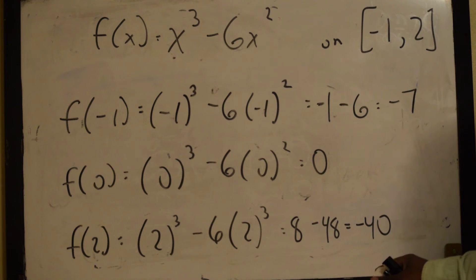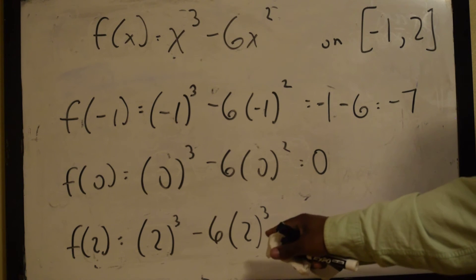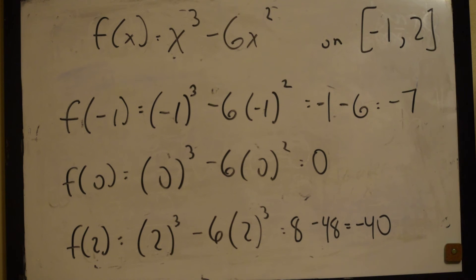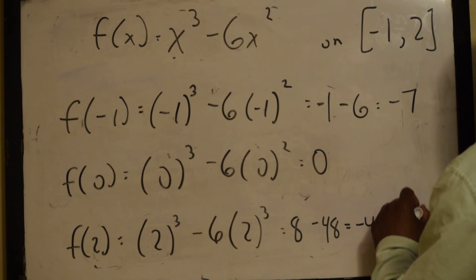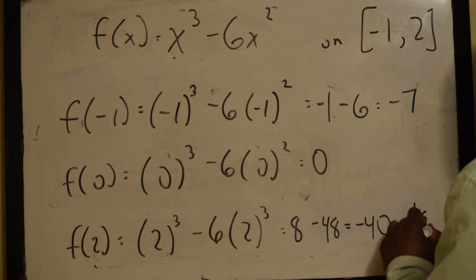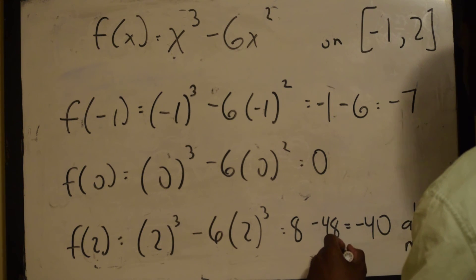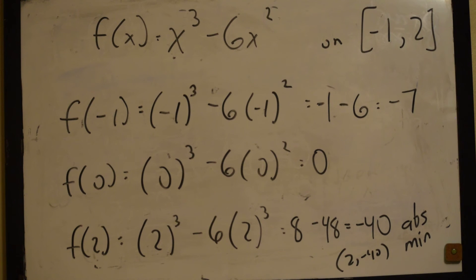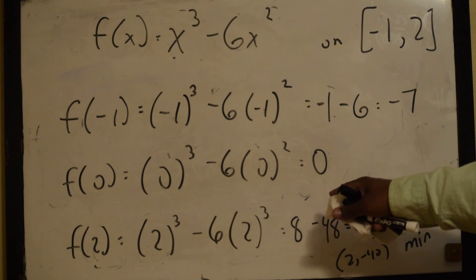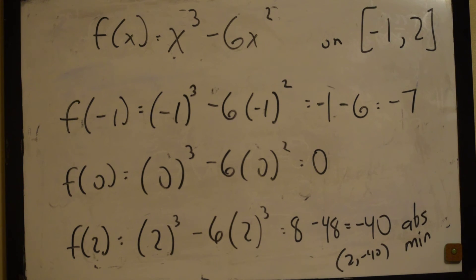The lowest point here is going to be 2, negative 40. That's an absolute minimum at 2, negative 40. The highest point is going to be 0, 0, which is our origin. So, that's the absolute max.